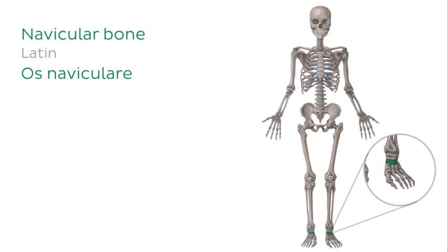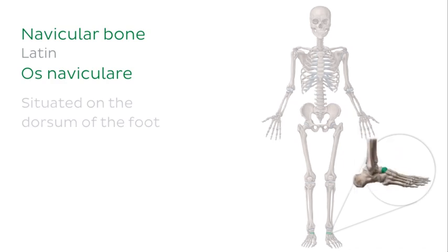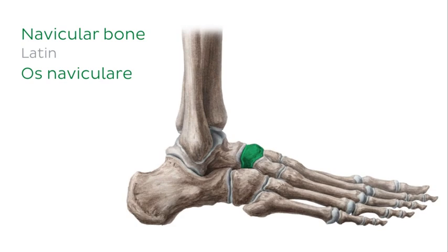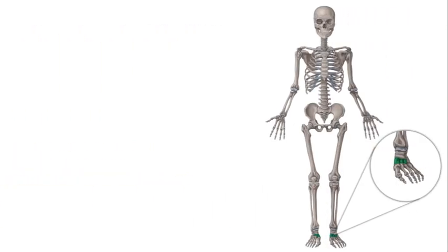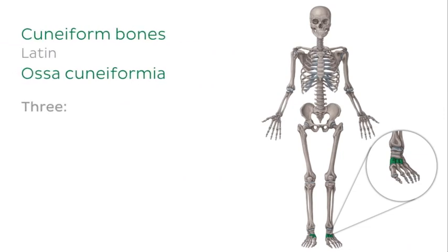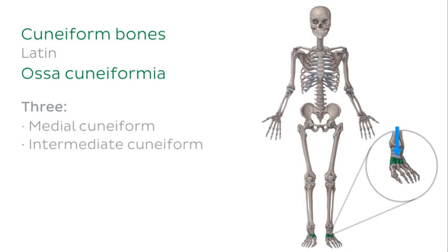The navicular bone is situated on the dorsum of the foot and articulates with the talus proximally, the cuboid bone laterally, and with the three cuneiform bones distally. There are three cuneiform bones situated on the medial side of the foot: the medial cuneiform, the intermediate cuneiform and the lateral cuneiform. Along with articulating with the navicular proximally, the cuneiform bones also articulate with the cuboid laterally and with the proximal surfaces of the first to third metatarsals distally.